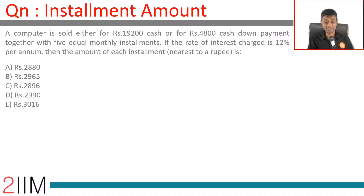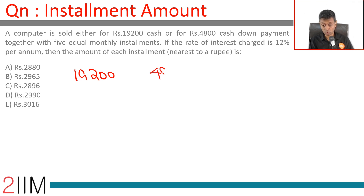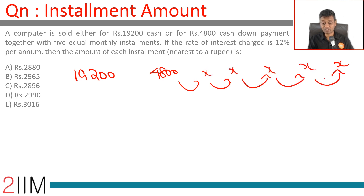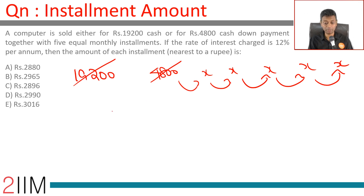A computer is sold either for ₹19,200 or for ₹4,800 cash down payment together with five equal monthly installments. The rate of interest is 12% per annum, or 1% per month. Since ₹4,800 is a down payment, we subtract it from ₹19,200: 19,200 minus 4,800 equals ₹14,400.